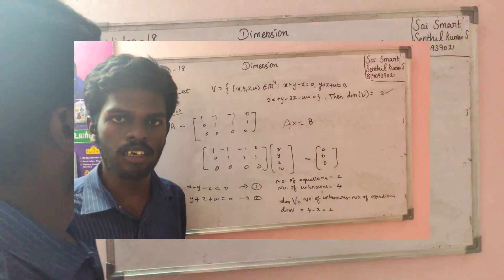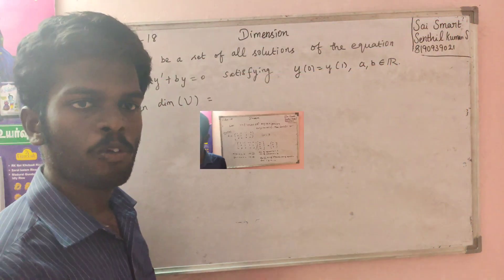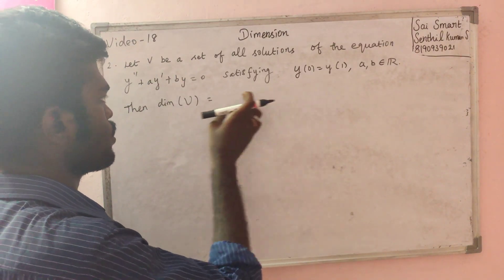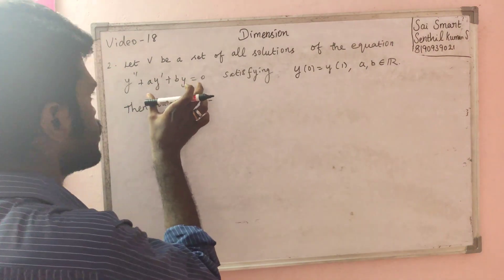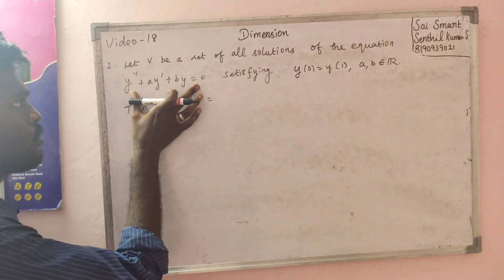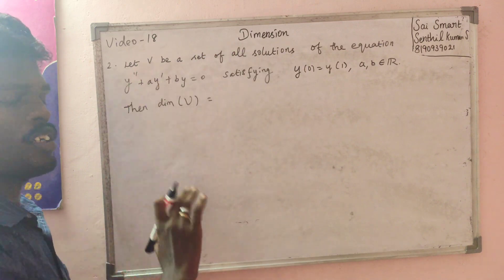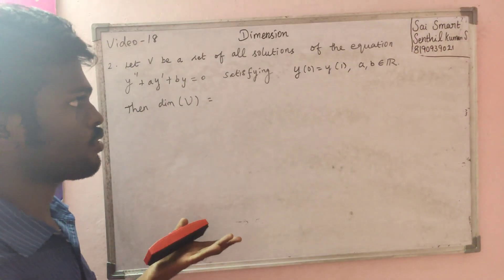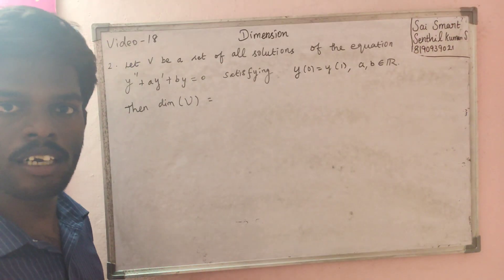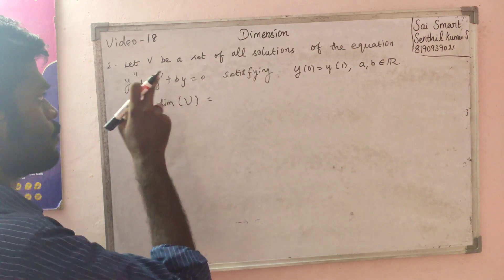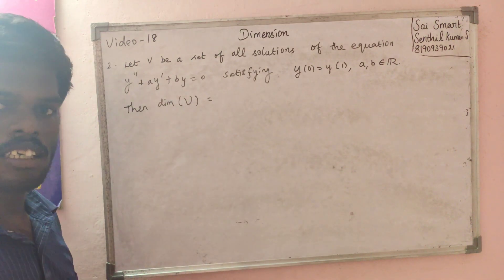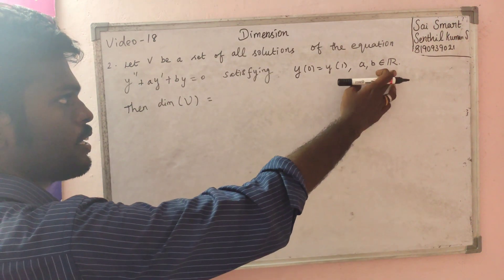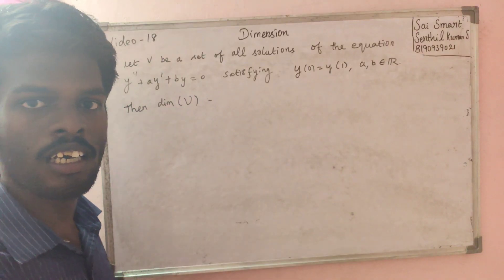Next is problem number 2. Let V be the set of all solutions of the differential equation. This is the differential equation and its false solutions. How many solutions are there? Because a and b are numbers, what is the solution of the equation?